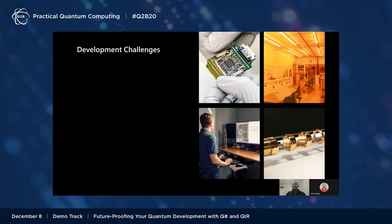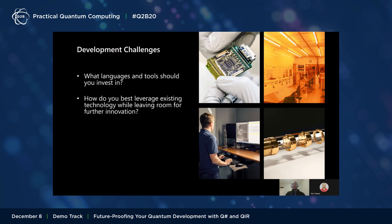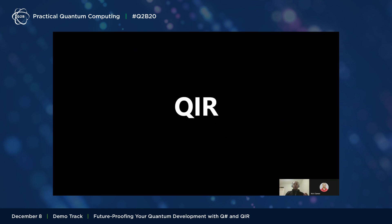But they also imply some challenges for those developing in a field with so much growth and change. For those of us working on the infrastructure and application of this new technology, we must ask important questions: what languages and toolsets should we invest in that we can rely on? How can we bridge the scenarios of today's NISQ systems — noisy intermediate-scale quantum systems — with the broad usages we anticipate for the future? At Microsoft, we've been considering these questions as we develop our stack for Azure Quantum, and our answer is the Quantum Intermediate Representation, or QIR.